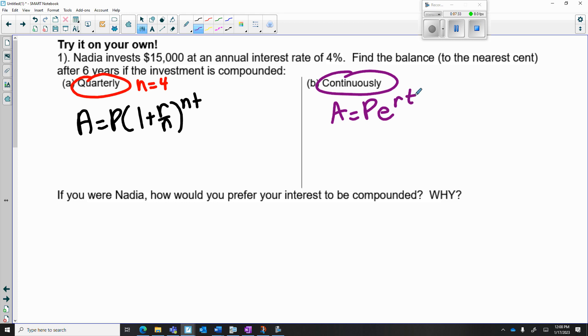Keep in mind you're still going to have the same initial amount for both, which is the principal of $15,000. You're still going to have the same rate, 0.04, and the same time, t = 6. The difference is just you're using a different formula. All right, thank you.